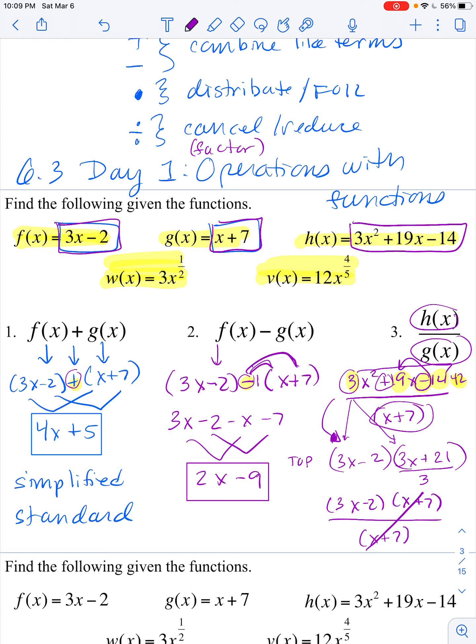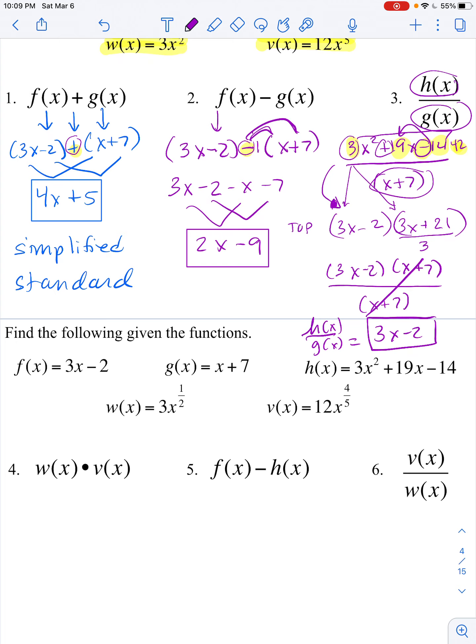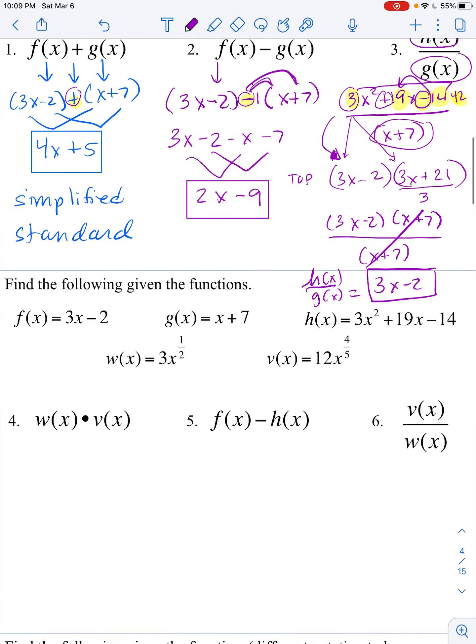My final answer to h of x divided by g of x will be just the 3x minus 2. So those do get tricky because you have to cancel, reduce, simplify, and that might be really easy or it can be pretty complicated like what we just did. That's kind of the worst case, but I would rather show you the worst case.